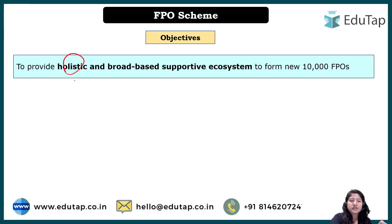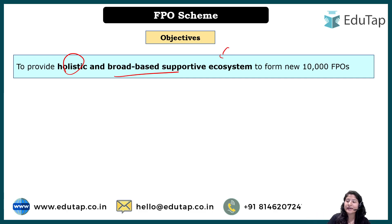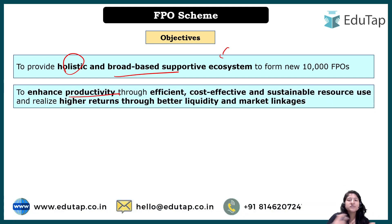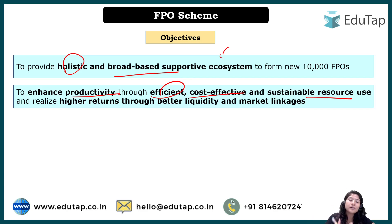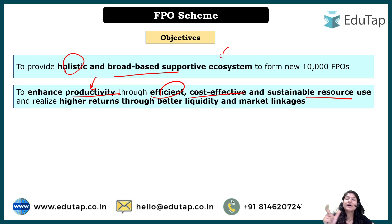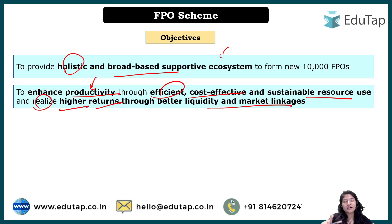The objective of the scheme is to provide a holistic and broad-based supportive ecosystem for new FPOs. The aims include: increasing productivity, making them efficient, building their capacity, enabling cost-effective and sustainable resource use — using minimal inputs to get maximum output. FPOs will also be taught how to get higher returns through better market linkage, along with handholding and support for up to five years from the year of their creation.